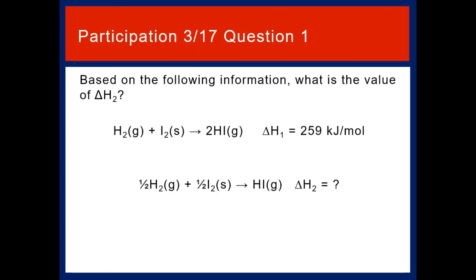This brings us to question one for participation 317. Based on the following information, what is the value of delta H2? The reference reaction is: H2 gas plus I2 solid becomes 2HI gas, with delta H of 259 kilojoules per mole. The target reaction is: one half H2 plus one half I2 — gas and solid respectively — becomes HI gas. What is the enthalpy change for this target reaction based on the given enthalpy of the reference reaction? This is due Wednesday, March 17th at 11:55 p.m. on Blackboard.